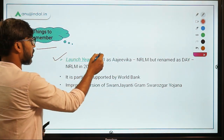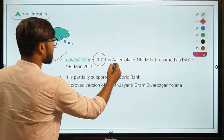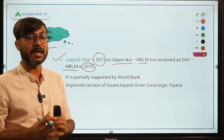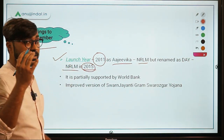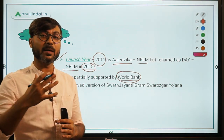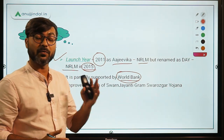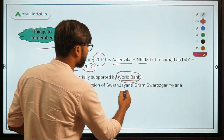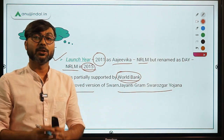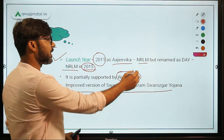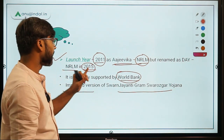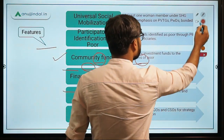The scheme was launched in the year 2011 as Aajeevika NRLM. Later it was renamed as Day NRLM — Deen Dayal Antyodaya Yojana National Rural Livelihood Mission — in the year 2015. Another very important point is that this scheme is supported by the World Bank, which provides funding for its implementation. It is an improved version of Swarnajayanti Gram Swarozgar Yojana, which was restructured in 2011 as Aajeevika NRLM and then renamed as DAY-NRLM in 2015.